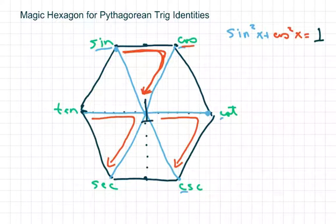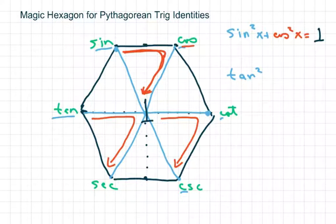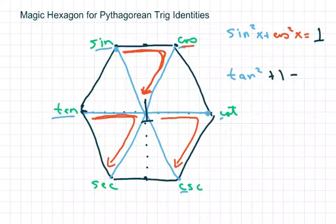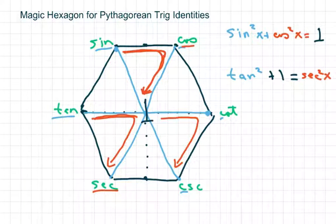Now let's look at the tan one. So we're going to start with tan — tan squared. Then we went around here to 1, so plus 1. And that's going to equal secant squared.